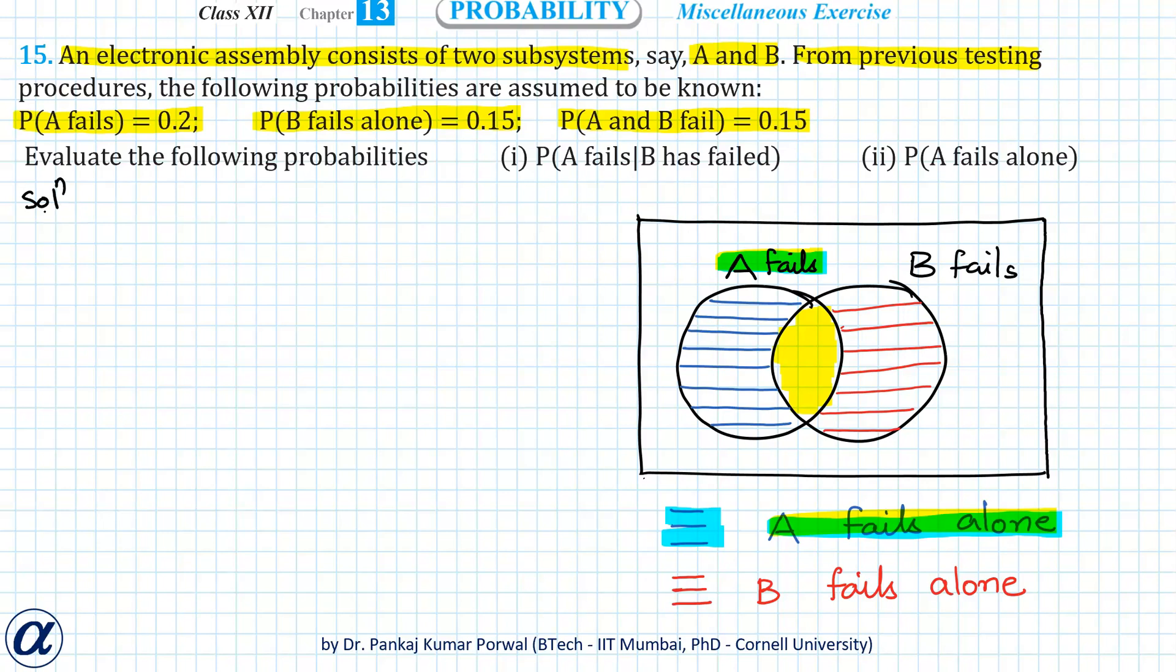Now in the first part, we want to find probability that A fails given B has failed. This I can write using conditional probability as probability A and B fail, that will be intersection of event A fails and B fails, divided by probability that B fails.